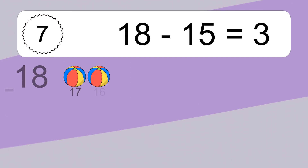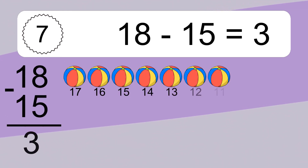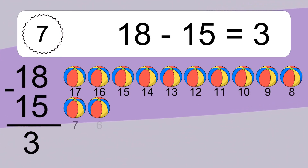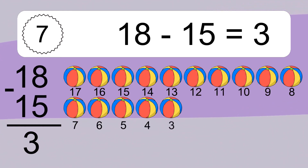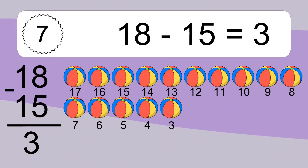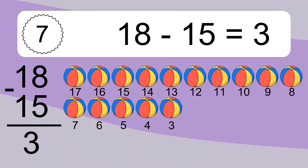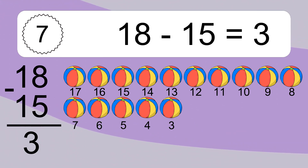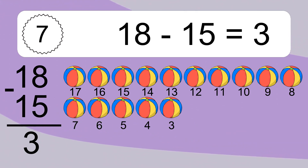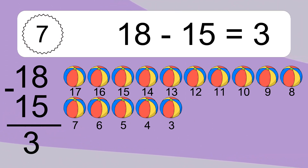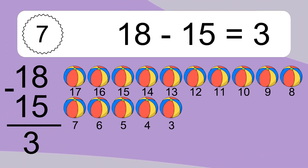18 minus 15 equals 3. Let's count it: 17, 16, 15, 14, 13, 12, 11, 10, 9, 8, 7, 6, 5, 4, 3.